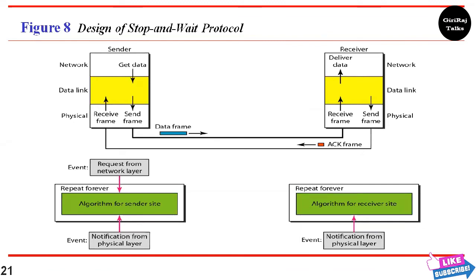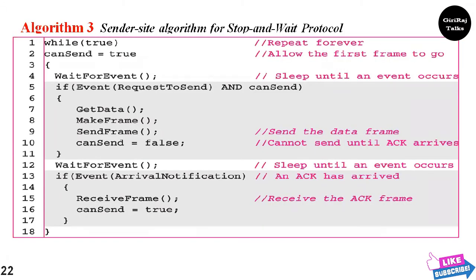We still have unidirectional communication for data frames, but auxiliary ACK frames — simple tokens of acknowledgement — travel in the other direction. We add flow control to the previous protocol. Figure 8 illustrates the mechanism: there is traffic on the forward channel from sender to receiver and on the reverse channel. At any time there is either one data frame on the forward channel or one ACK frame on the reverse channel, so we need a half-duplex link.